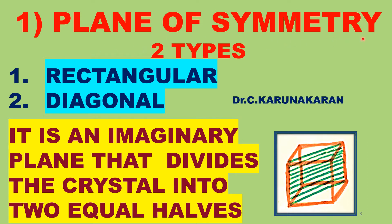Define plane of symmetry in crystal systems. It is an imaginary plane — see the green shading — that divides the crystal into two equal halves. The two equal halves are related as object and mirror image. So it is an imaginary plane or mirror that divides the cubic crystal into two equal halves. There are two types of plane of symmetry.